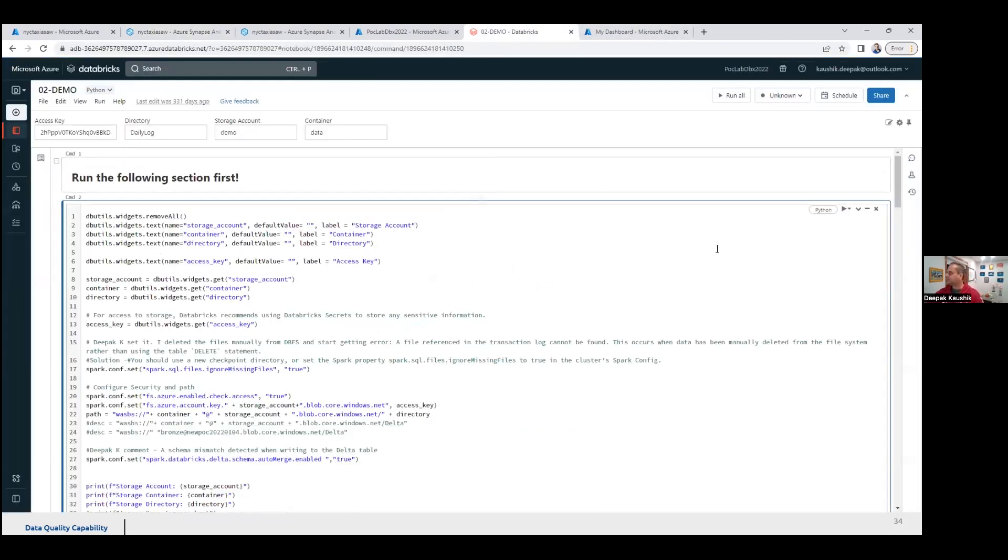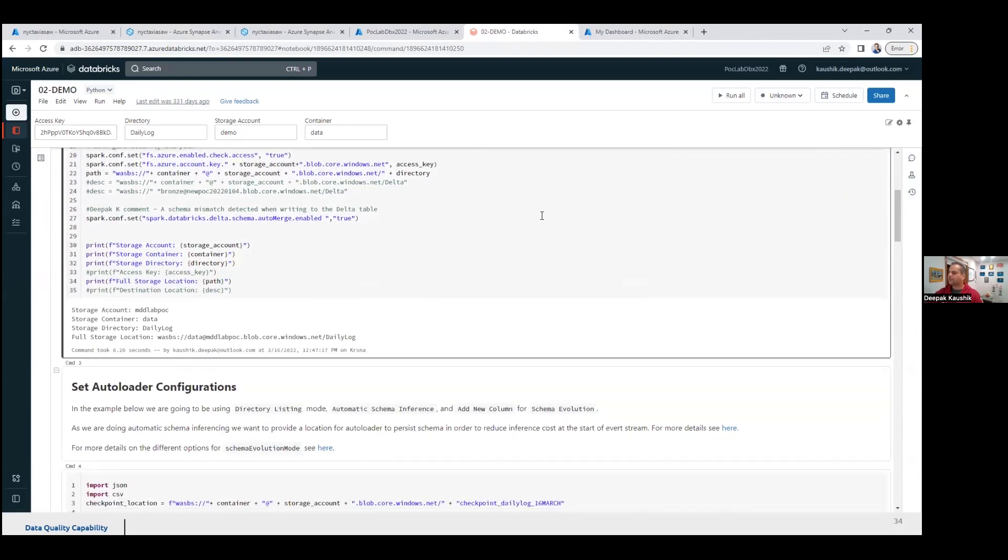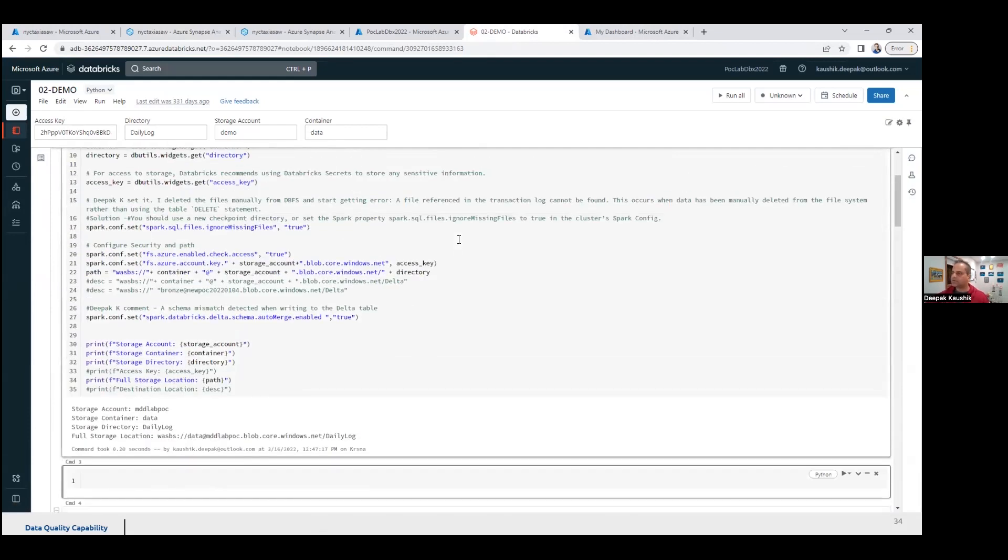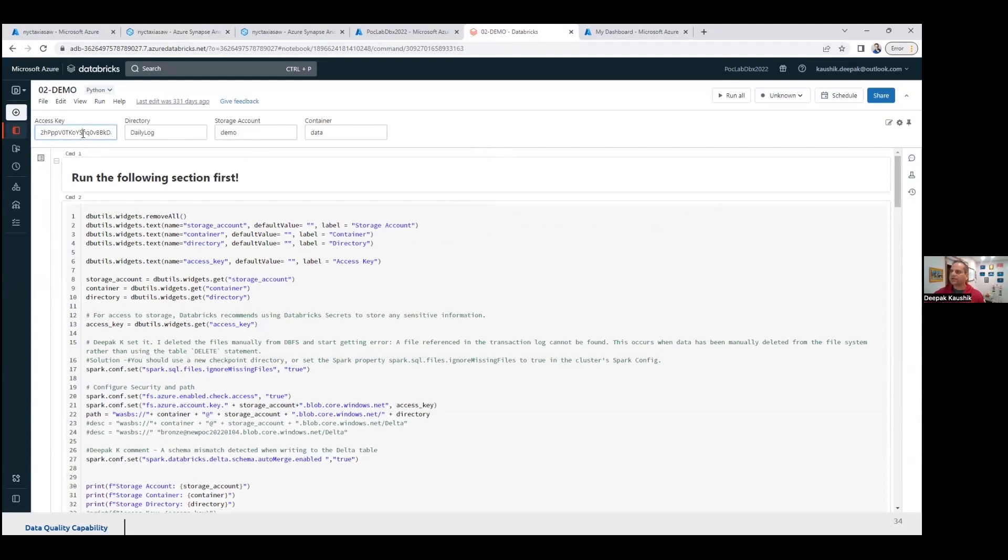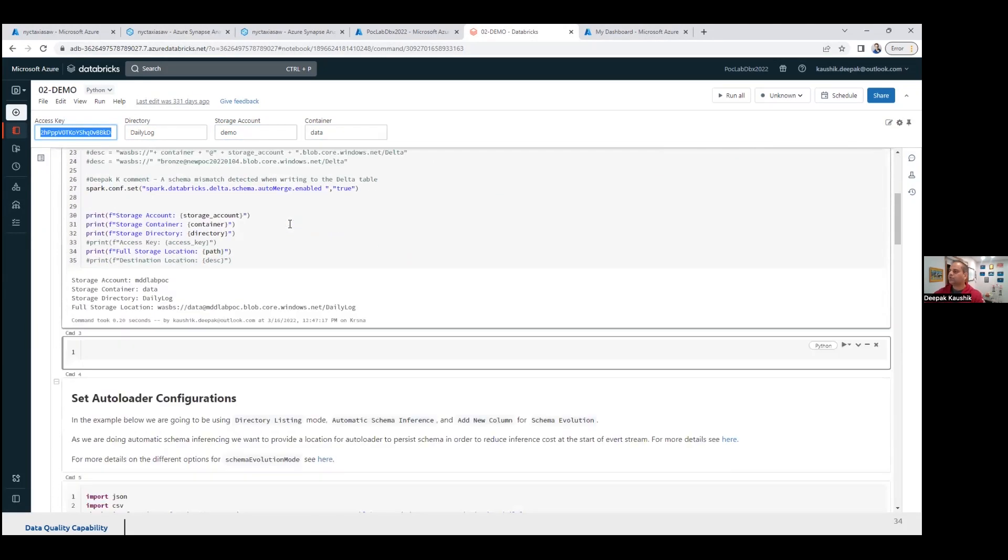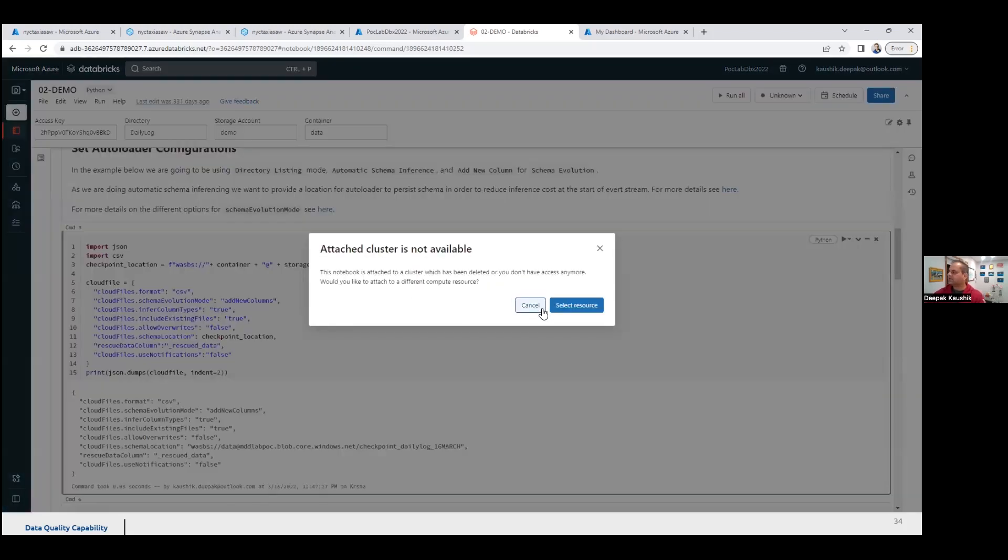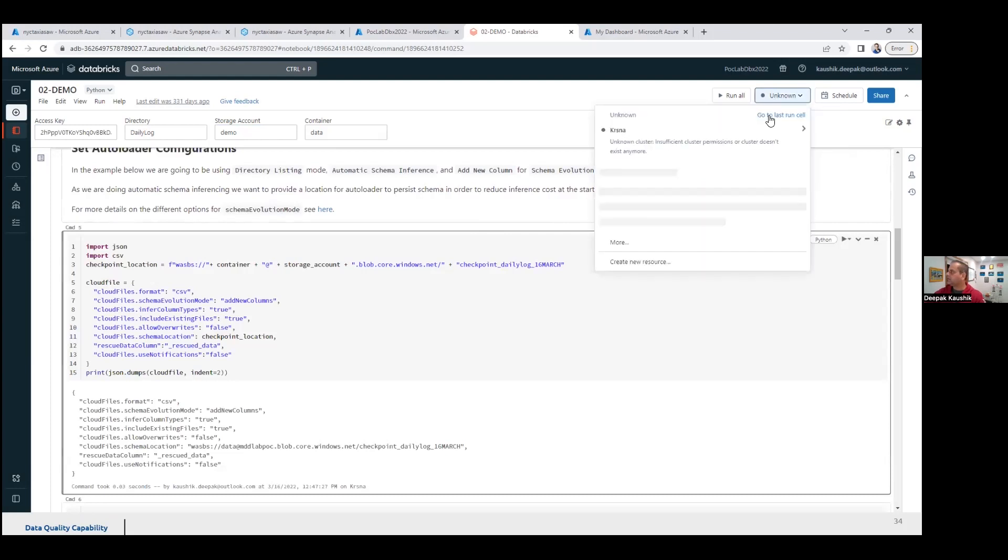I use Python. So basically, you could use Python or you could use SQL or any language or Scala or whatnot. I like Python more. So that's why I use Python. So what I did, I gave the access key, basically, whatever the access key is, container name, and I give the detail, what file you need to ingest. Hey, I said, autoloader, please ingest. So it's asking me for cluster. So let me give the cluster.